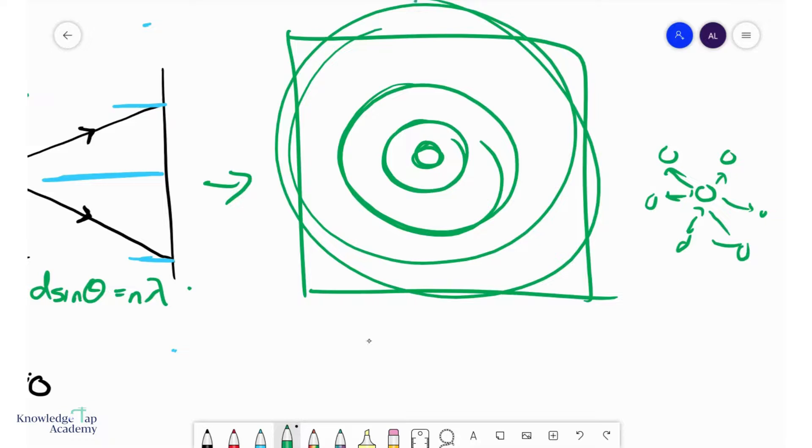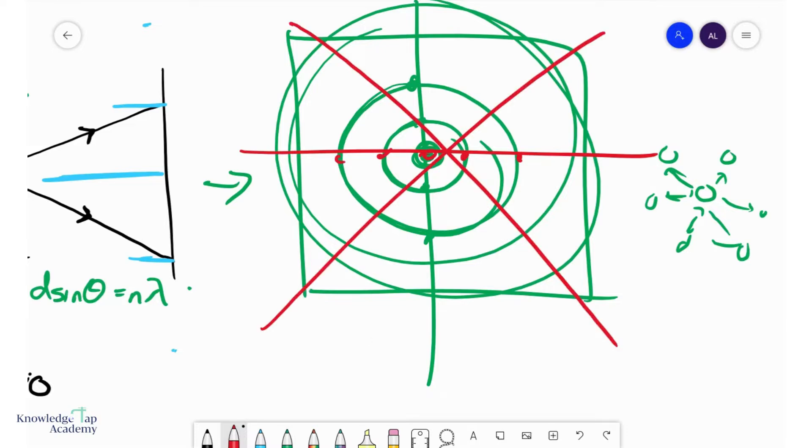So there's one diffraction pattern forming like this, that's the central maximum, that's the first orders, the second orders, there's another one forming like this, first orders, second orders, so on and so forth, another one like that, like that. And so when you put it all together, you get a series of circles, concentric circles, and so that is a circular diffraction pattern.